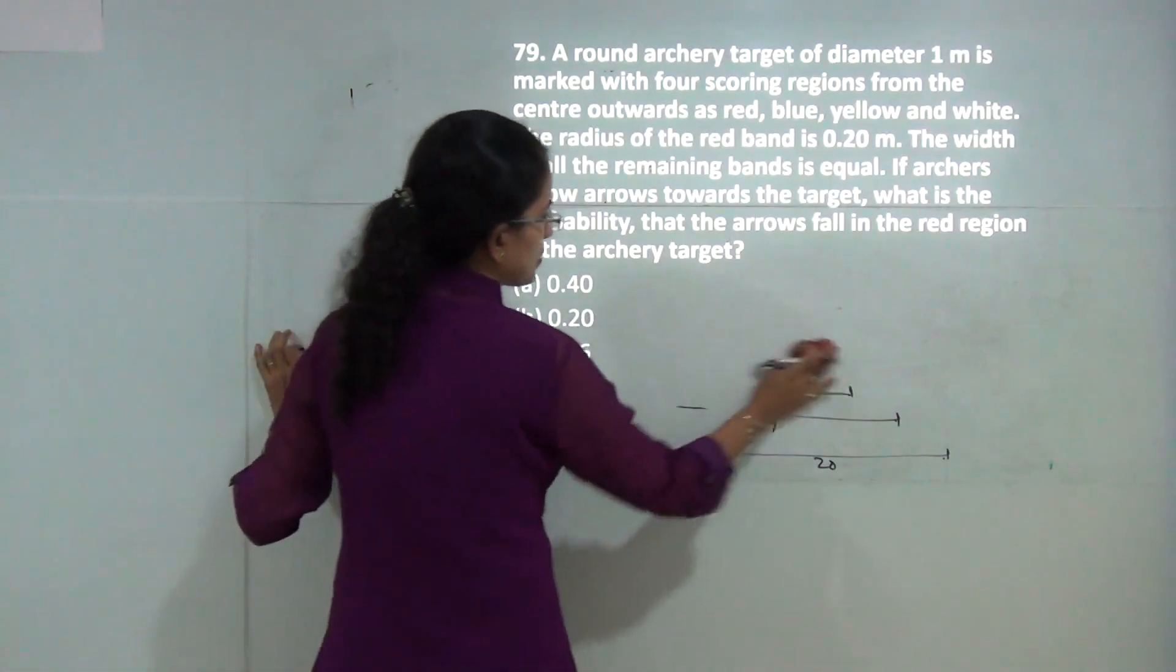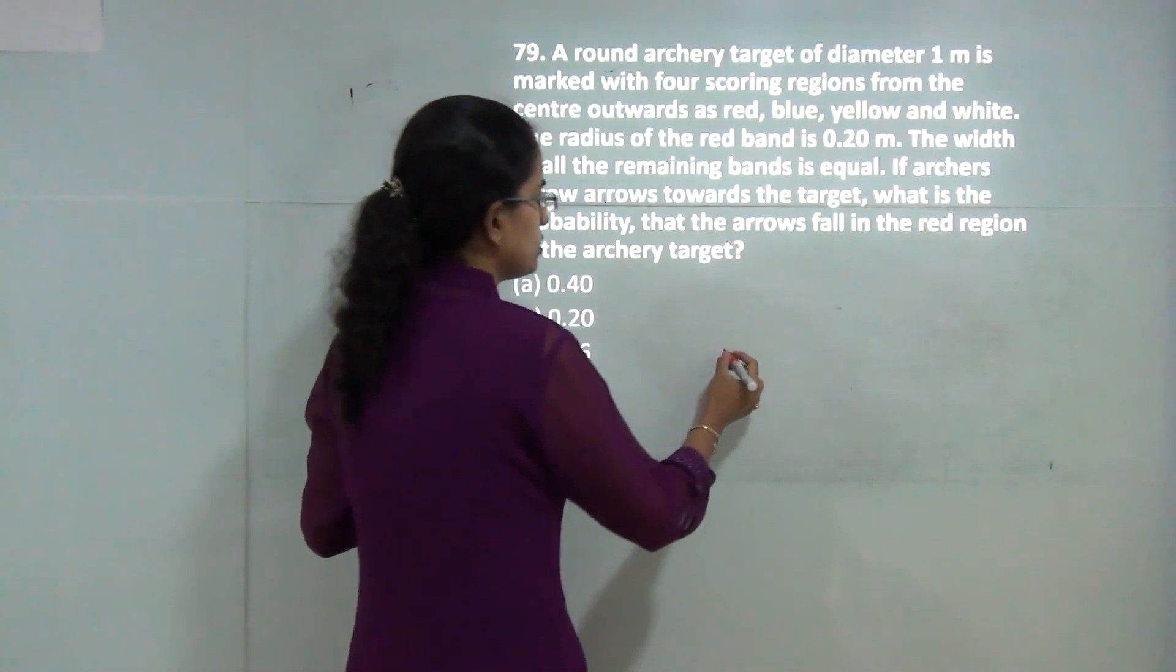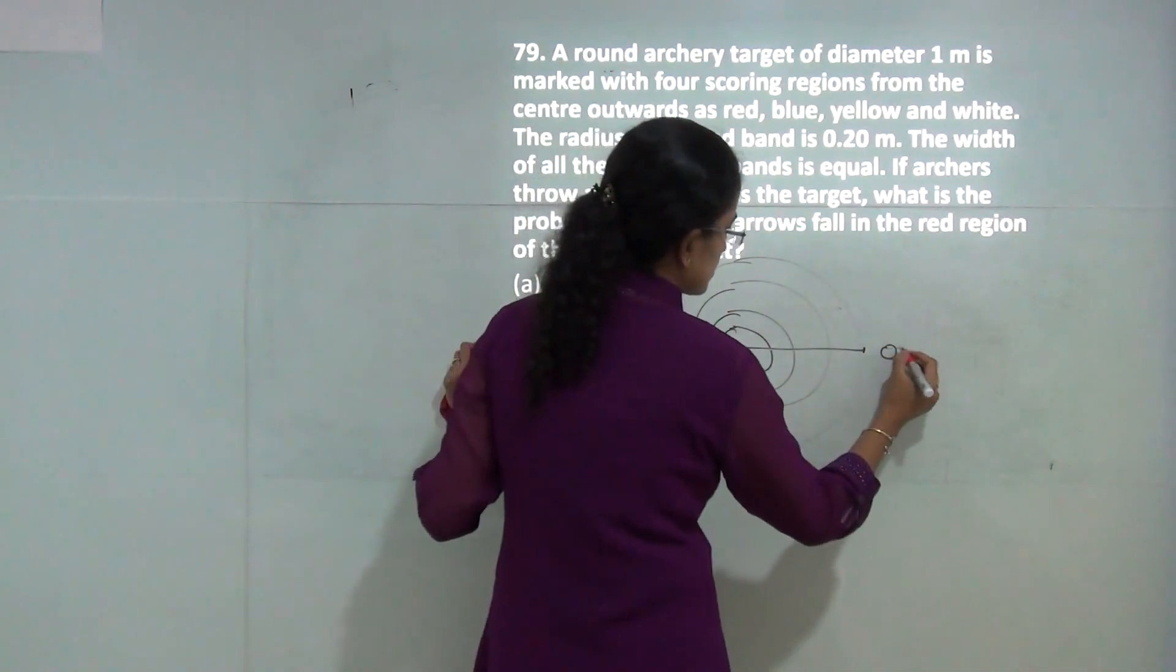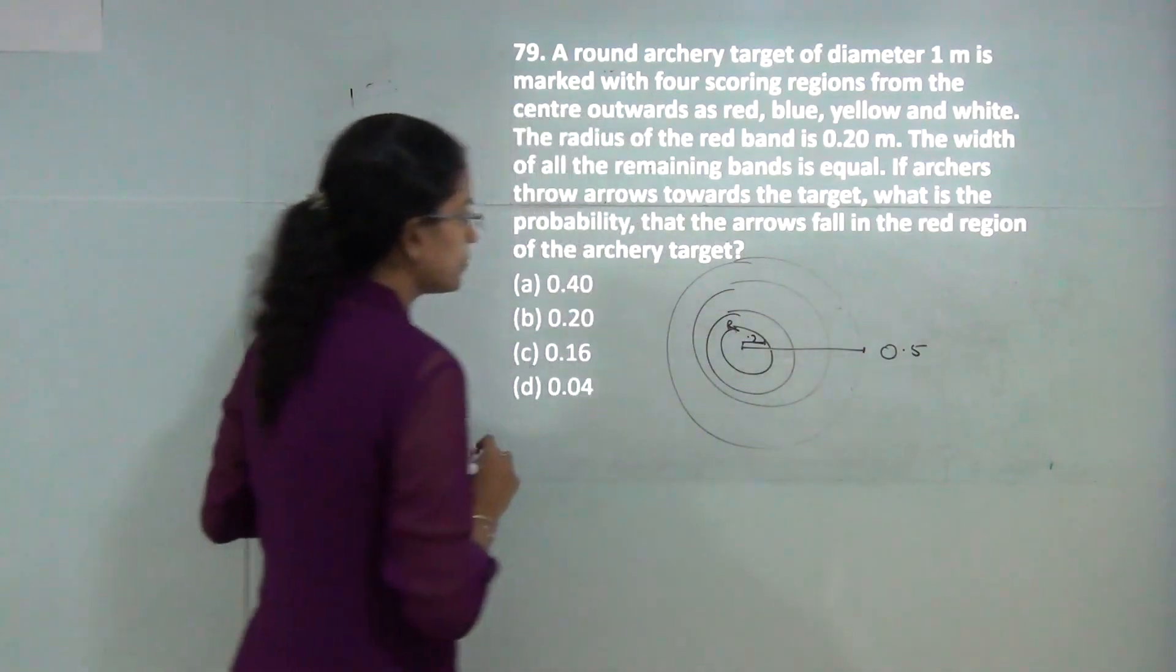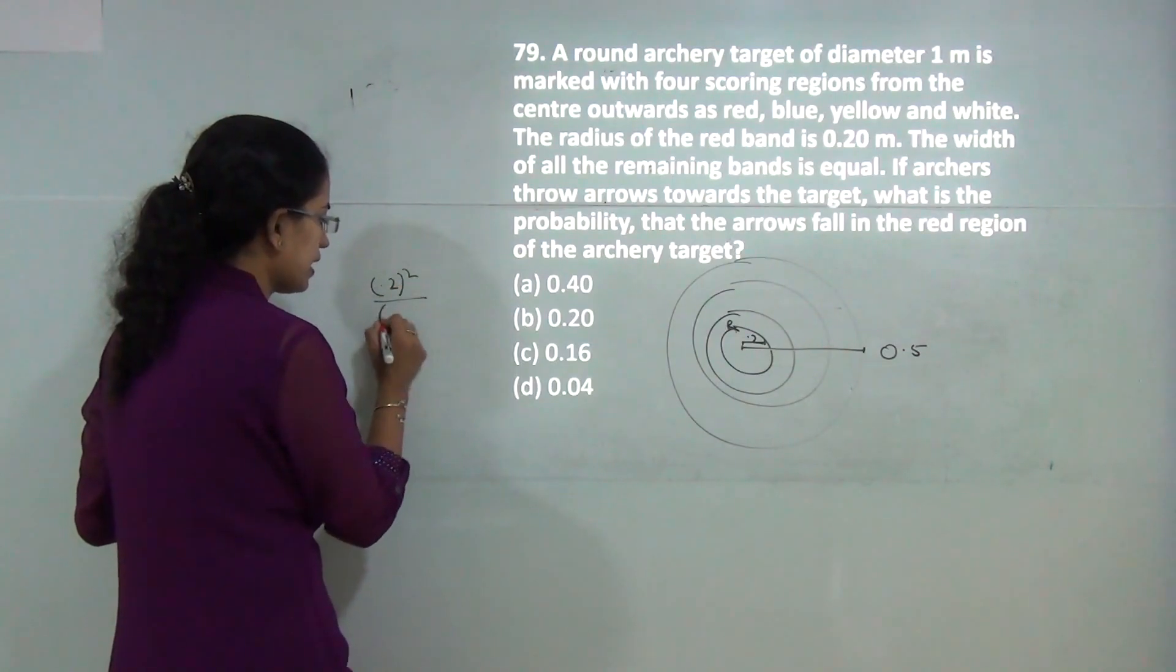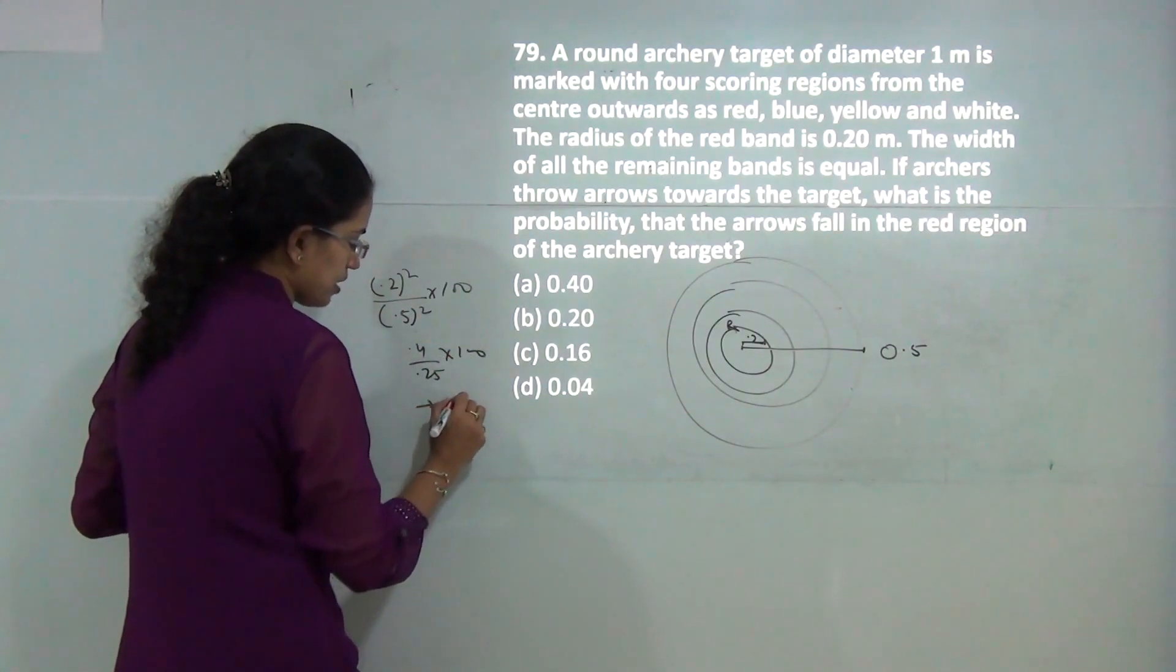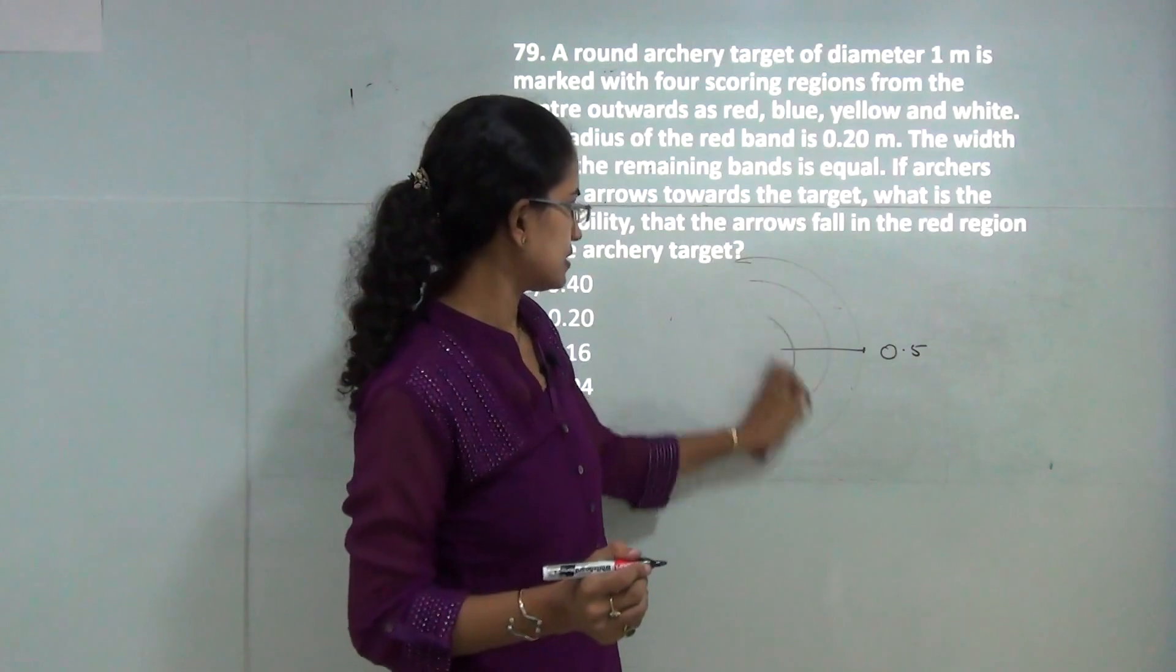An archery target has four regions: red, blue, yellow, and white. The total diameter is 1 meter, so radius is 0.5, and the red region radius is 0.2. Probability varies with area, so it's 0.2 squared divided by 0.5 squared, which equals 0.04 divided by 0.25, giving 0.16. 0.16 is the correct answer.